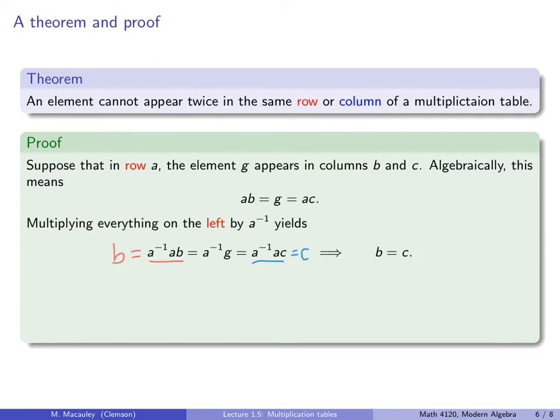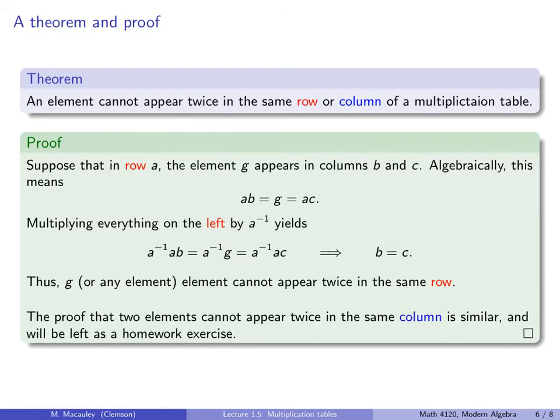This is actually not a proof by contradiction, though it seemed like it was going to be that way. Instead, what we did is we said, suppose that in some row A, we have an element that appears in two columns, column B and column C, not necessarily assuming they are different. We prove that B and C are the same column. So no contradiction there, we just proved that. What we concluded from this is that g cannot appear in two different columns, because anytime it appears in two, they have to be the same. In other words, any element g cannot appear twice in the same row. The proof that two elements cannot appear twice in the same column is very similar, and that's left as a homework exercise. Really the only difference is that instead of multiplying on the left by A, you multiply on the right by A.